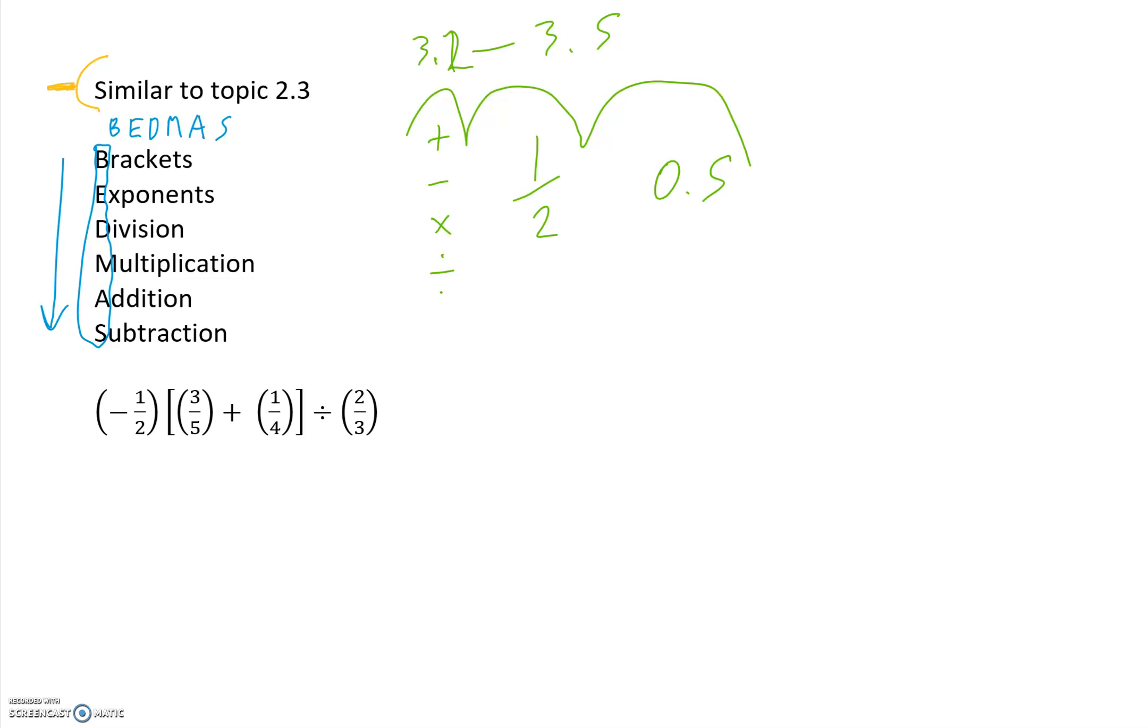If we're looking at this question here, our first step is to look at brackets. What are the brackets telling us? Well, these brackets tell you nothing. It's just around the number. But what you notice is that we have square brackets. Square brackets are just there sometimes to distinguish between two sets of brackets. That's what the square brackets sometimes do.